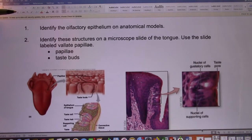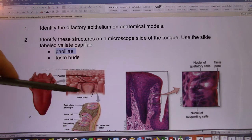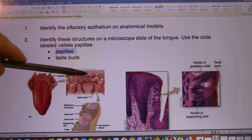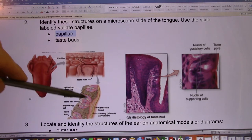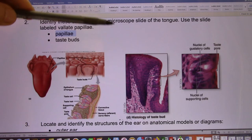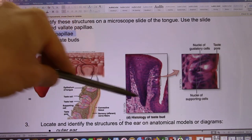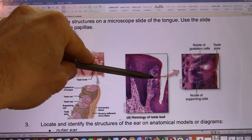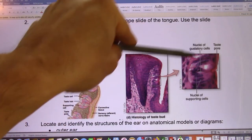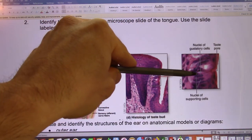In the gustatory system, on the tongue, you have the papillae, and that's the structure. And your taste buds are inside, so you have to zoom in to look at the papillae, and inside, that's the taste buds. So in the slides, look like this. The whole thing, this is the papillae, and that's the taste buds. So the taste buds look like this, and you have those chemical sensors we talked about in the class.